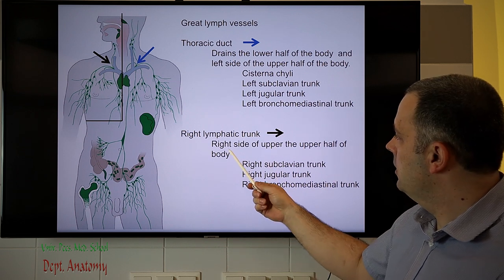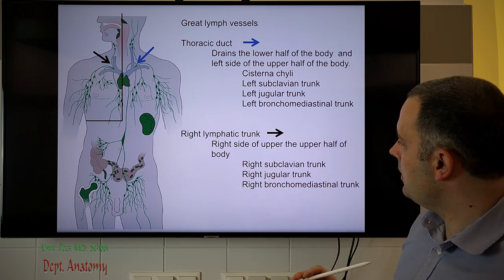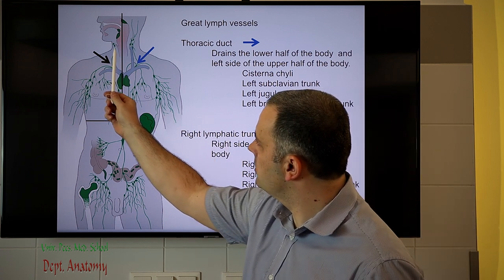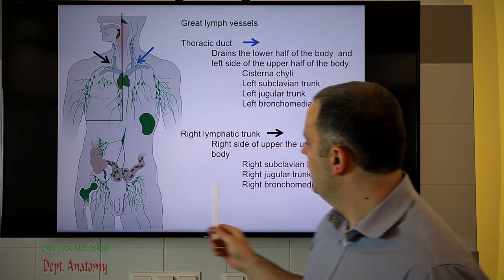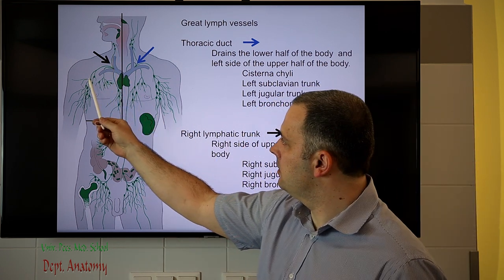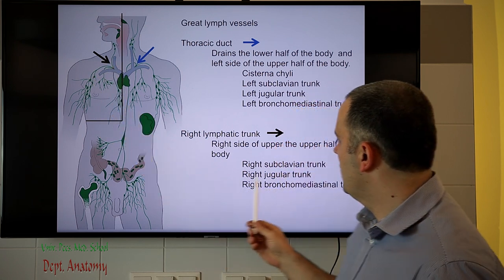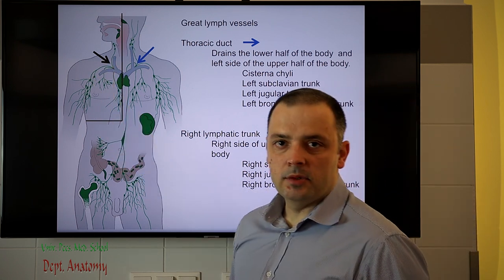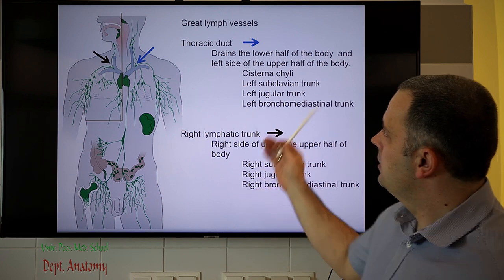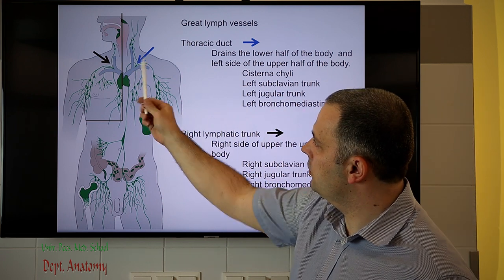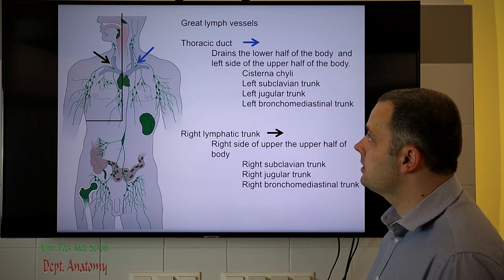The right lymphatic trunk collects the right jugular trunk from the neck, the right subclavian trunk, and also the bronchomediastinal trunk. In this way, the lymph fluid returns to the venous circulation.